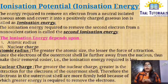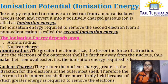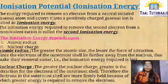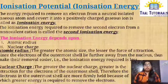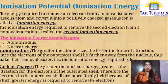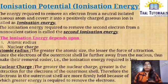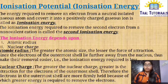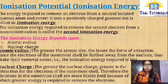The Ionization Energy required to remove the second electron from the monovalent cation is known as second ionization energy, and it continues. The Ionization Energy required to remove the third electron is known as third ionization energy.